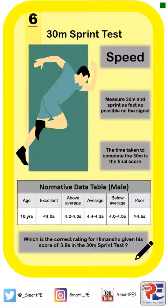Himanshu managed to score a time of 3.9 seconds in their 30 metre sprint test. When you compare that to the normative data table, 3.9 seconds is less than four seconds, so it falls in the excellent rating. Himanshu's score gives him a rating of excellent for his 30 metre sprint test.